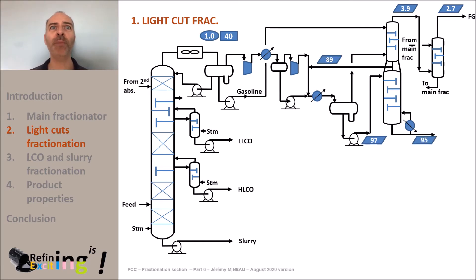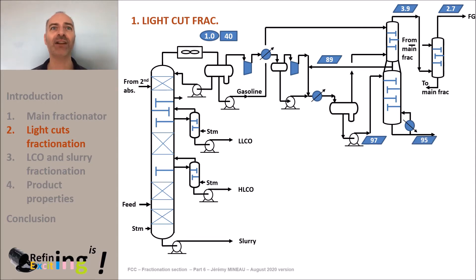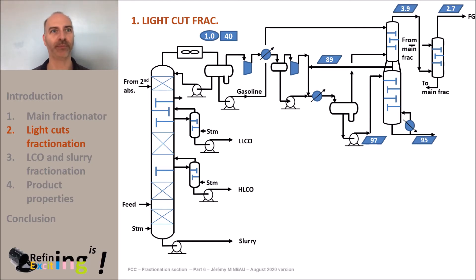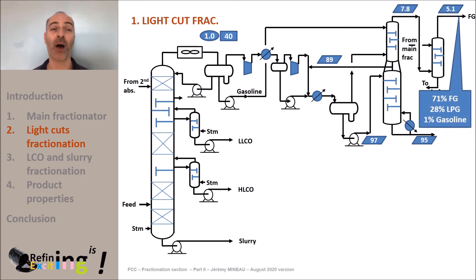As a reminder, the stripper receives 89 plus 8 equals 97 tons per hour of gasoline plus LPG mixture, and we now have 95 tons per hour of gasoline plus LPG leaving the bottoms of the stripper. The difference is 97 minus 95 equals 2 tons per hour, which will be the overhead gas of the stripper. Thus we go from 3 to 5 tons per hour as new fuel gas rate, or plus 2 tons per hour logic.